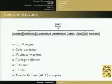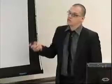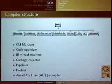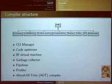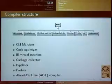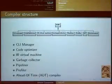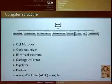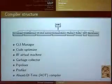I'm going to introduce the structure of the compiler, which is useful if you want to use or extend it. We have the CLI manager, which translates the bytecode to intermediate representation; the code optimizer; the virtual machine of the IR language; the garbage collector; the pipeliner, which orchestrates the whole compiler and compiles everything in parallel to decrease compilation delay; and a profiler that profiles only internal compiler modules, since profiling of generated code is done by the code optimizer.